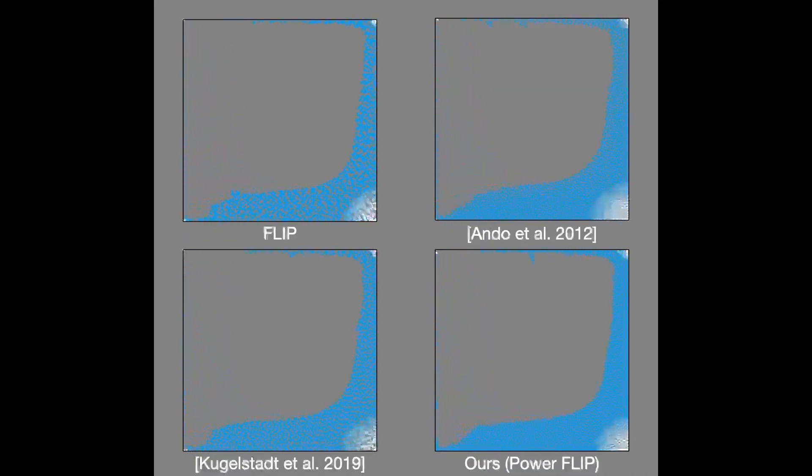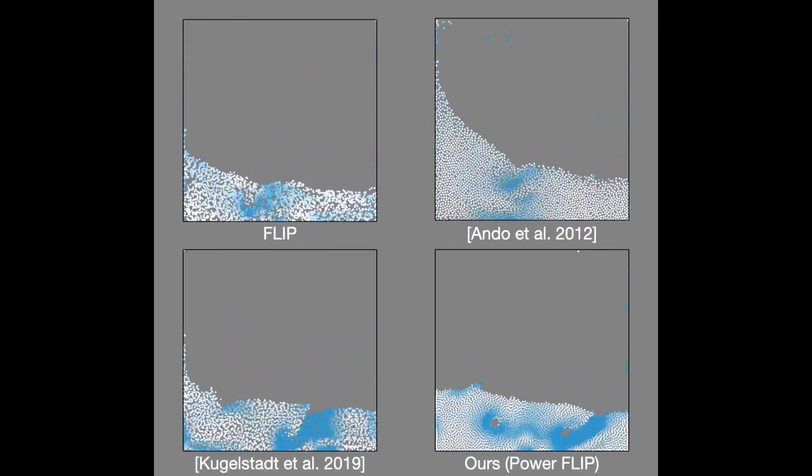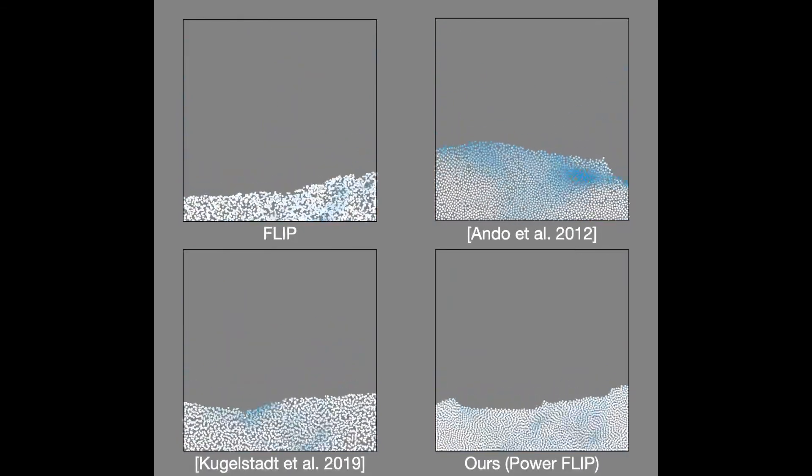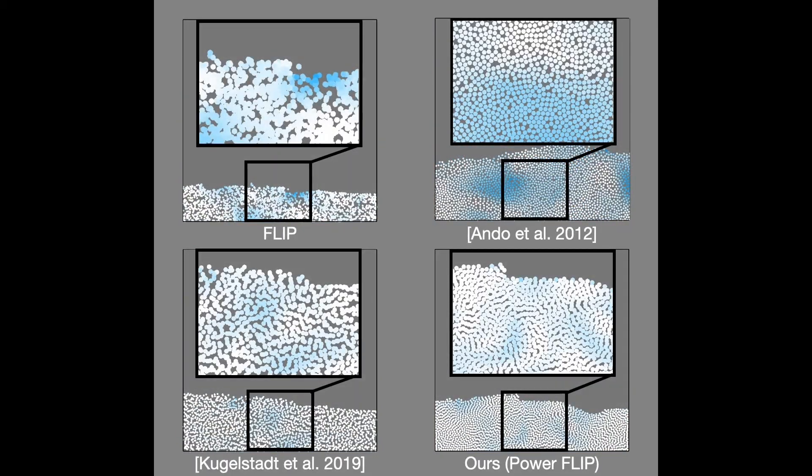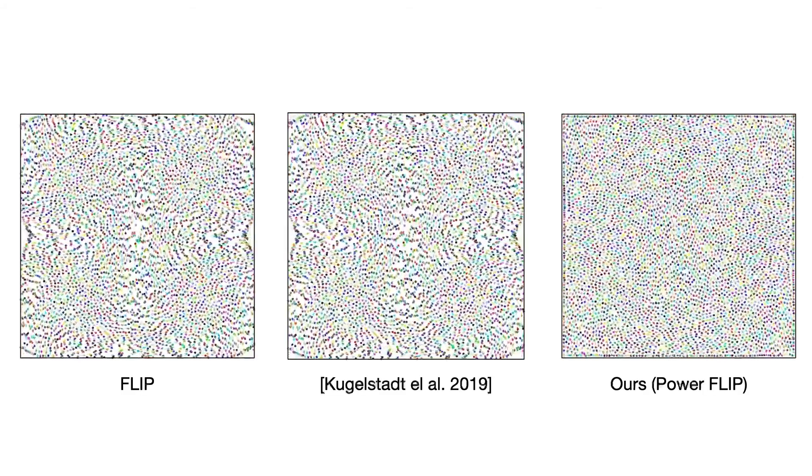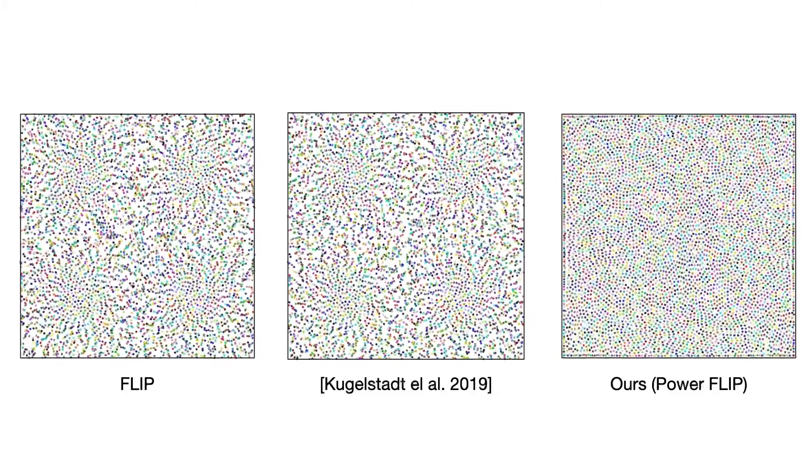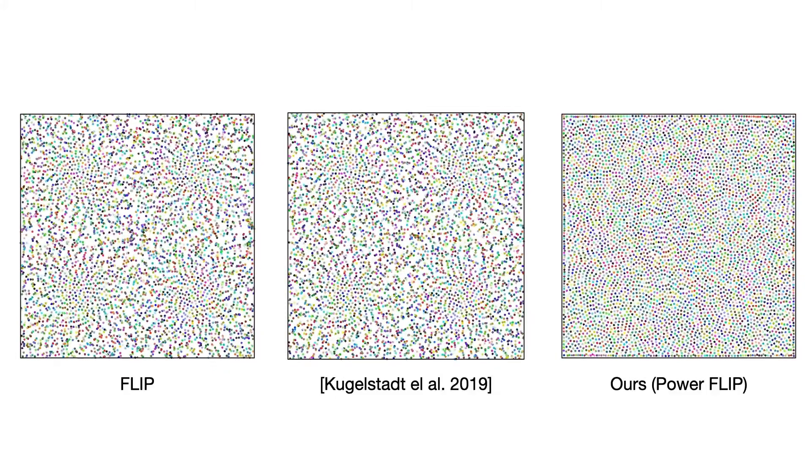Compared with FLIP and APIC, our method preserves volume and uniform particle distribution. With traditional methods, particle clumping and voids cannot be fully avoided, even with state-of-the-art position correction.